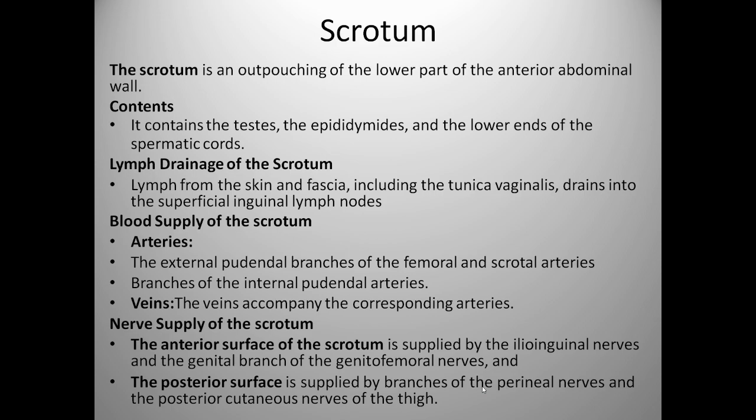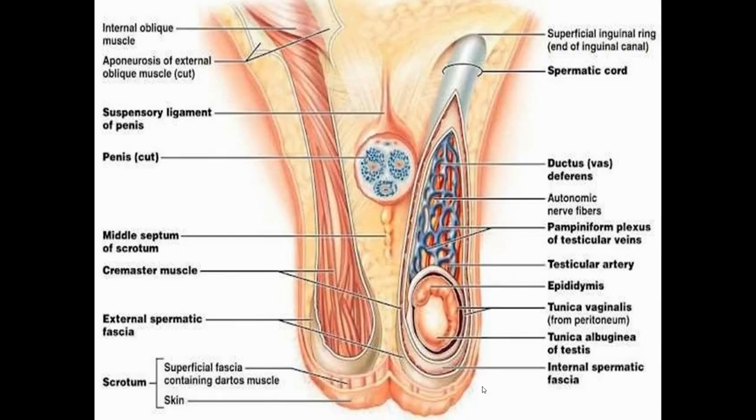The anterior surface of the scrotum is supplied by the ilioinguinal nerve and the genital branch of the genitofemoral nerve, and the posterior surface is supplied by the branches of the perineal nerve and the posterior cutaneous nerve of the thigh.